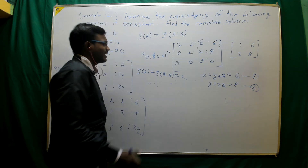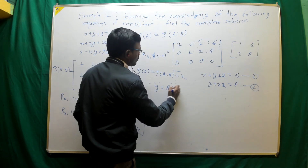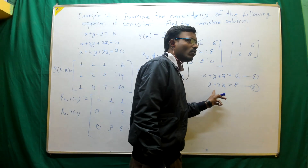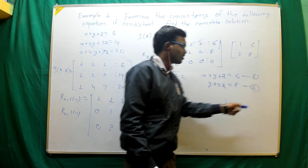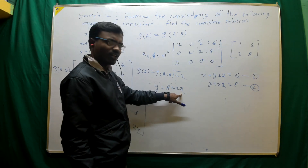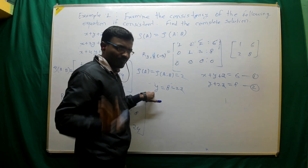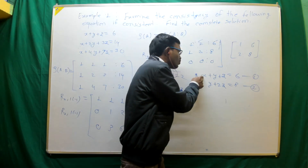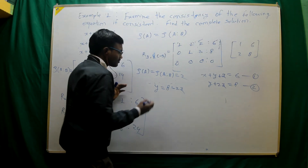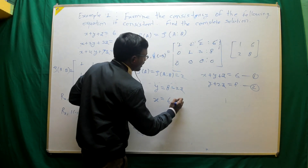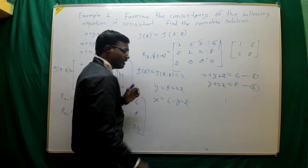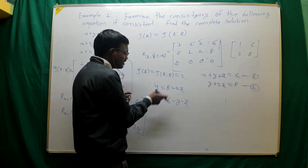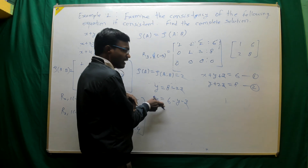From the second equation, I can write y equal to 8 minus 2z — when 2z moves to the right-hand side, plus 2z becomes minus 2z. So y equal to 8 minus 2z. Now put this value of y into equation 1, which gives x equal to 6 minus y minus z. Substitute y equal to 8 minus 2z into this equation.